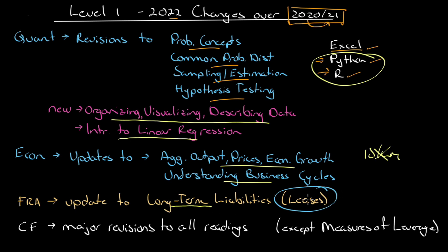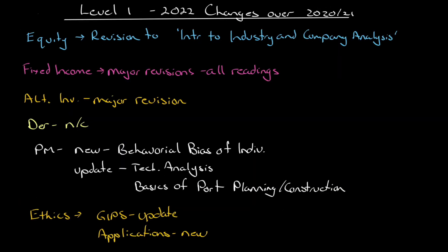In FRA, it's pretty much the same except there has been an update to long-term liabilities — the section on leases has been significantly enhanced. In Corporate Finance, there are major revisions to all readings except measures of leverage, and a reading from Level 2 has been brought down to Level 1 for capital budgeting.